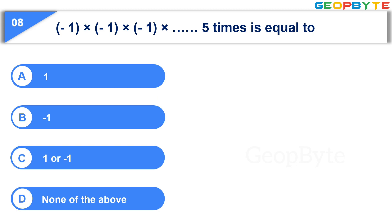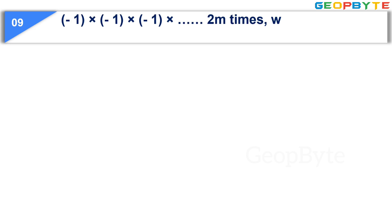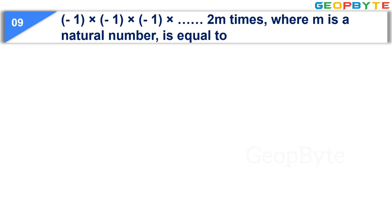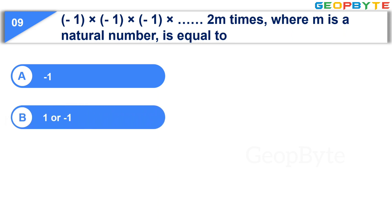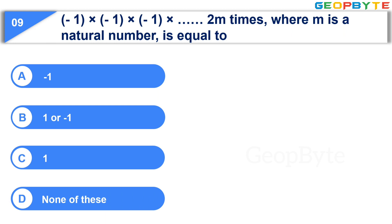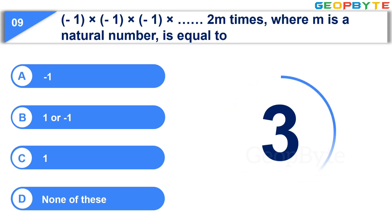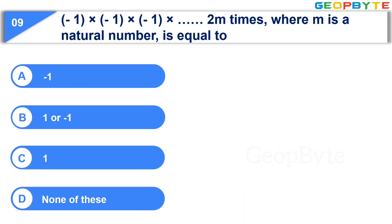Your time is up and the correct answer is Option B: minus 1. The next question is: minus 1 multiplied by itself 2m times, where m is a natural number, is equal to — Option A: minus 1, Option B: 1, Option C: 1 or minus 1, Option D: none of the above. Your time starts now. The correct answer is Option C: 1.